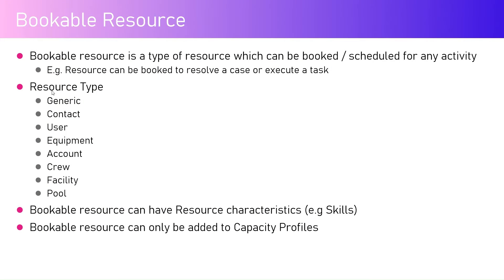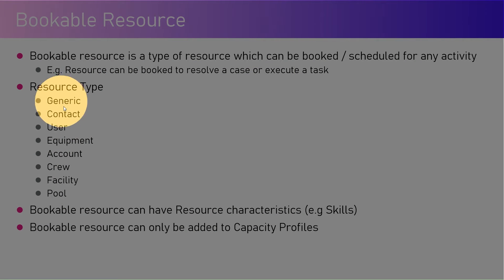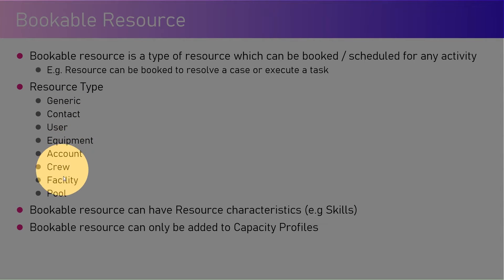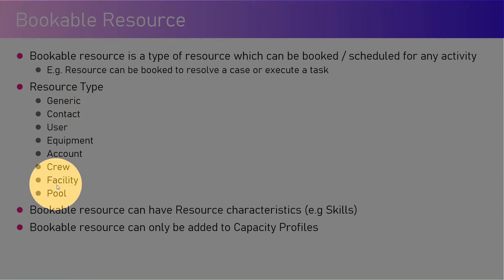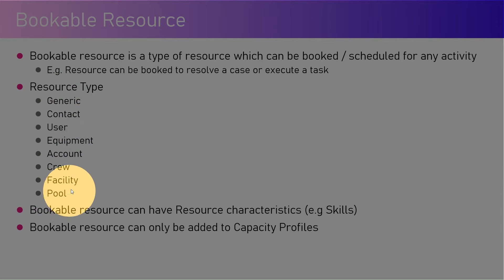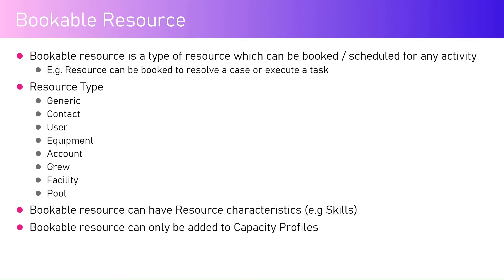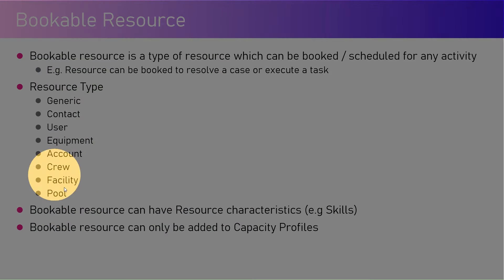The resource type is classified into: generic, contact, user, equipment, account, crew, facility, and pool. We are not going to go into all of these, but it is very important to understand that a resource is not only a person — it can be equipment, a crew (a group of users), or a pool of users.